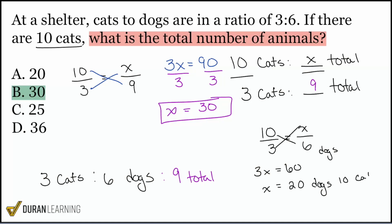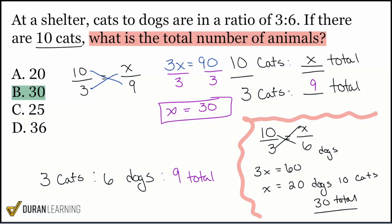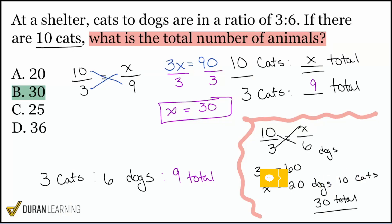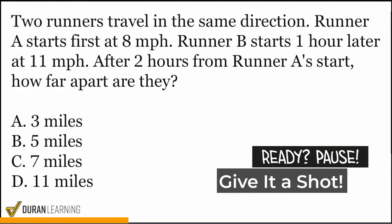If you had the 10 cats with 20 dogs, that would be 30 total animals — so that's the biggest part about these types of questions. It's really all about understanding the values you're using. If you understand what the numbers represent, then you know whether you're done or not.